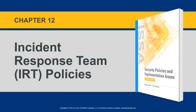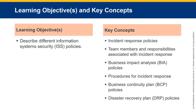Chapter 12: Incident Response Team Policies, also known as IRT. The learning objective is to describe different information system security (ISS) policies. Key concepts include incident response policies, team members and responsibilities, business impact analysis (BIA) policies, procedures for incident response, business continuity plan (BCP) policies, and disaster recovery plan (DRP) policies.